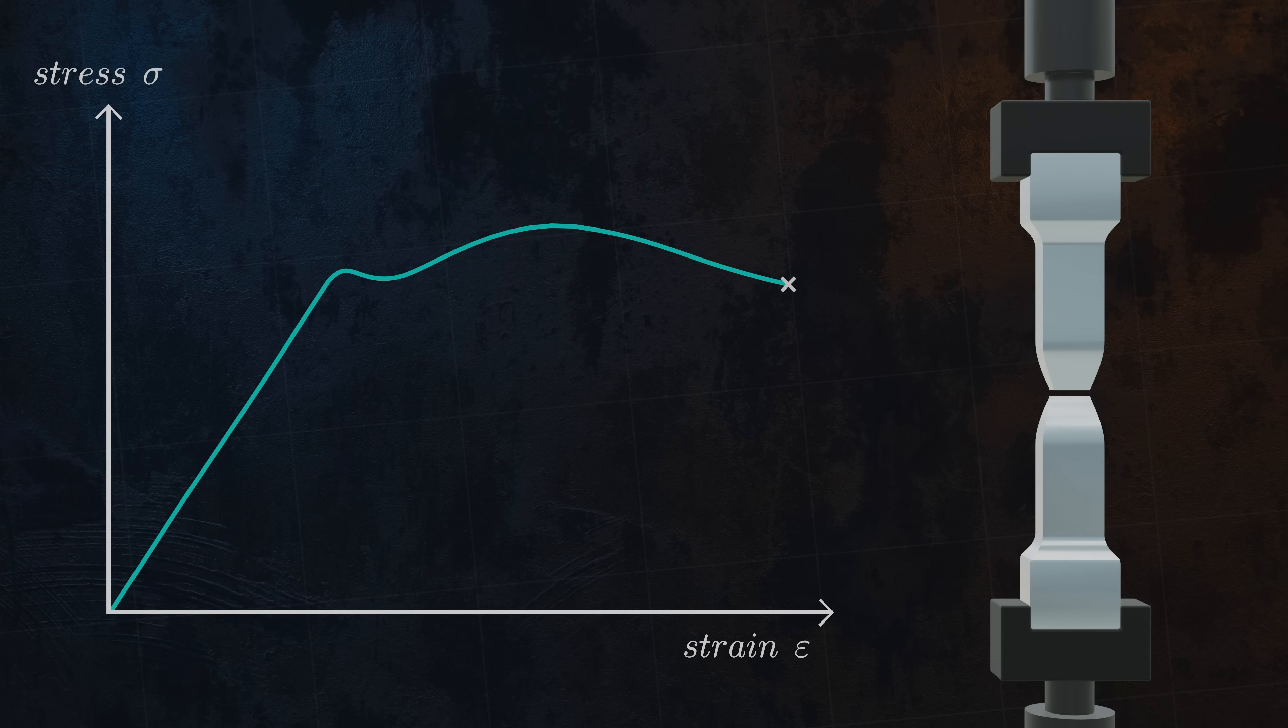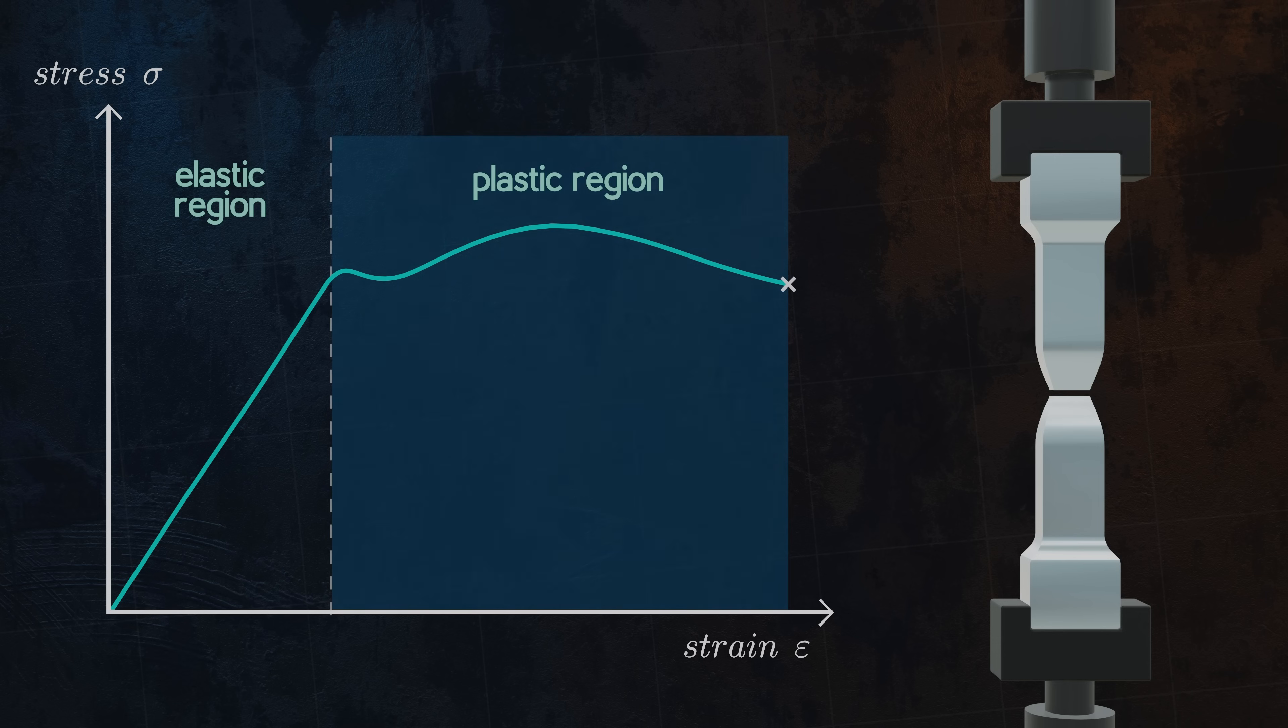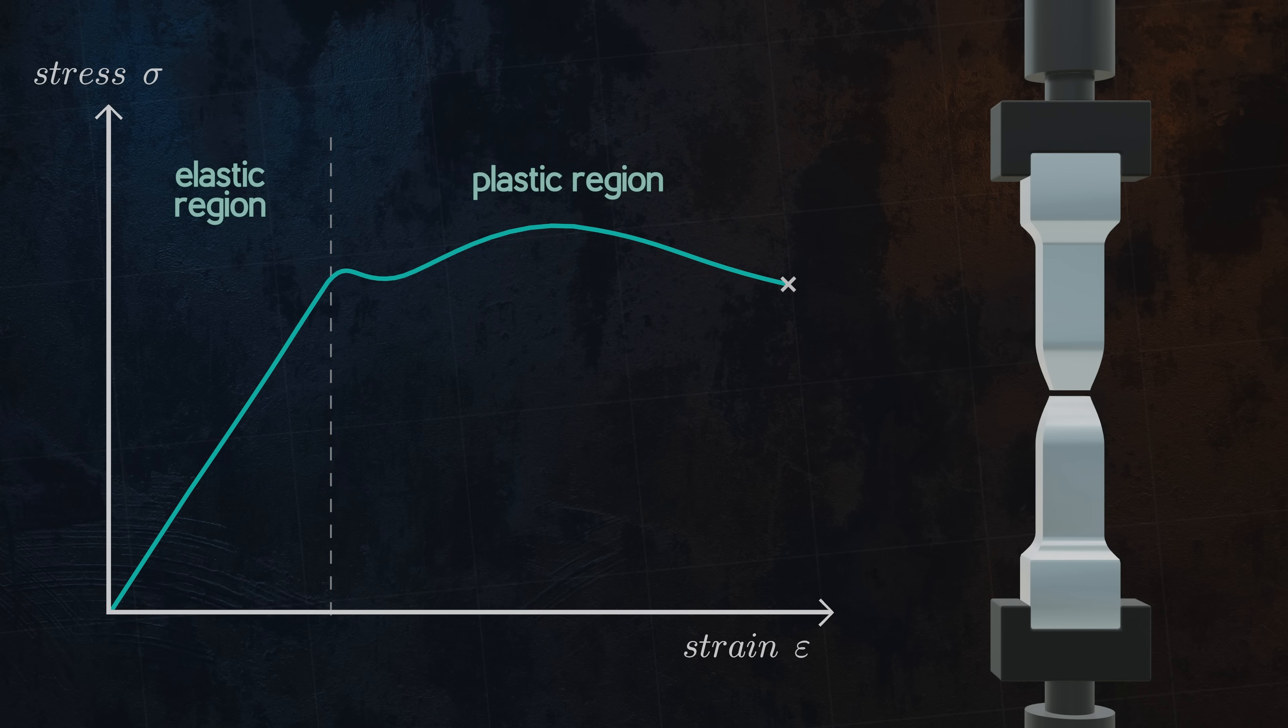We can observe that the stress-strain curve is split into two regions: the elastic region, where the curve is linear, and the plastic region. If the applied stress is low and we remain in the elastic region, the original dimensions of the component will be completely recovered when the applied load is removed. For larger stresses that take us into the plastic region, permanent plastic deformation will remain after the applied load is removed.